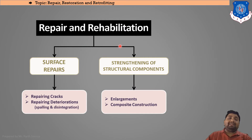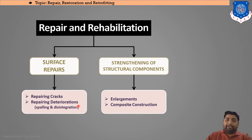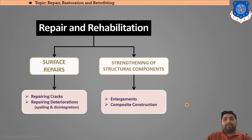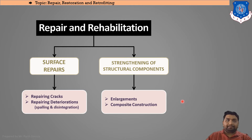Repair and rehabilitation are classified into two parts: surface repairs and strengthening of structural components. Surface repairs address cracking or deterioration in the form of spalling or disintegration. Strengthening of structural components involves enlargement of sections — such as beam sections — and composite constructions using steel and RCC together.